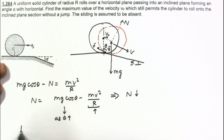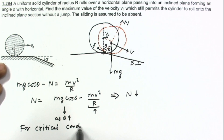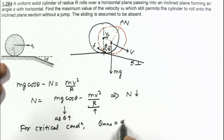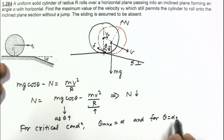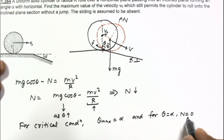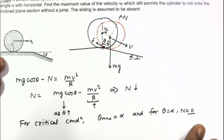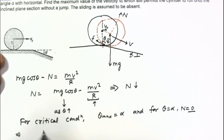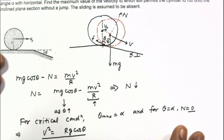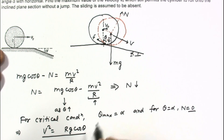For the critical condition, theta_max equals alpha. Since we require the maximum value of V0 for no jumping, at the critical situation we set N = 0 at theta = alpha. From the normal force equation with N = 0: v² = Rg·cos(theta). With theta = alpha, this gives v² = Rg·cos(alpha). This is one key relation.